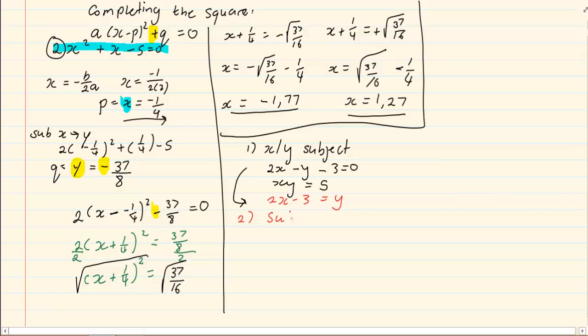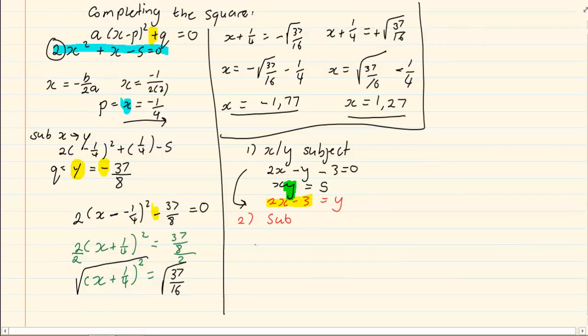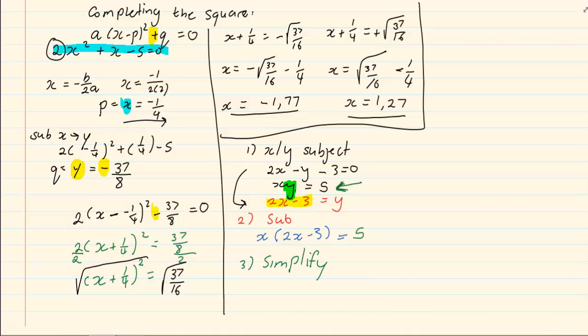Then, we are going to substitute. When we substitute, we are going to have x into, wherever y is, I am taking it out and I am putting 2x minus 3 equals, I am working with this particular equation. So, I have x into 2x minus 3 equals 5. Next, we simplify. When we simplify, be careful, it is at this level that a lot of mistakes are made. You simplify incorrectly and then you continue with this error all the way down. We are going to have 2x squared minus 3x equals 5.